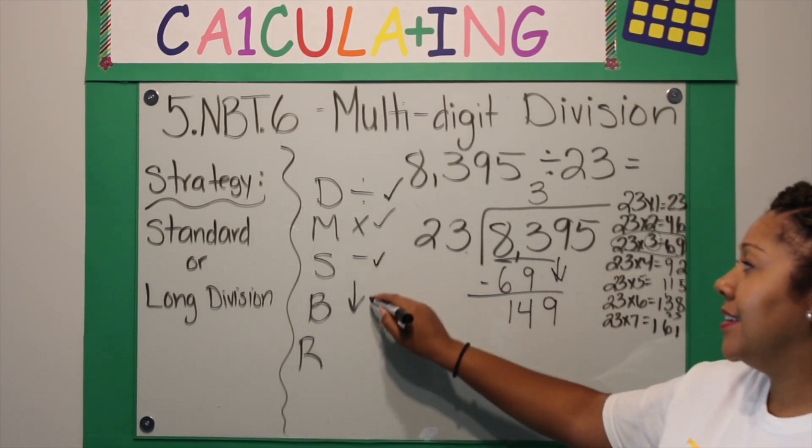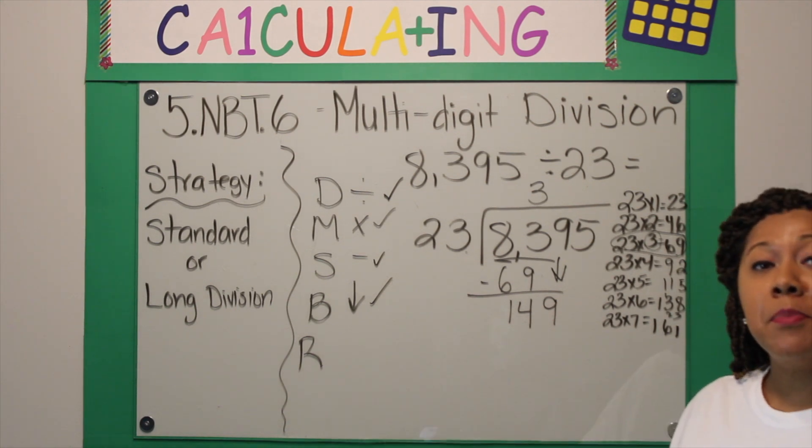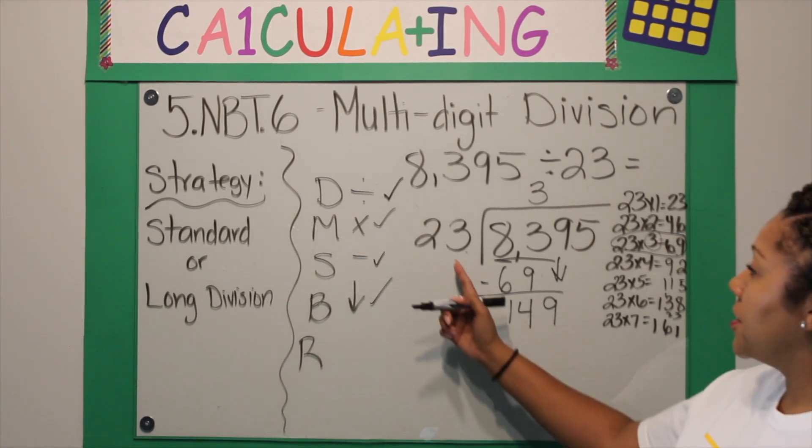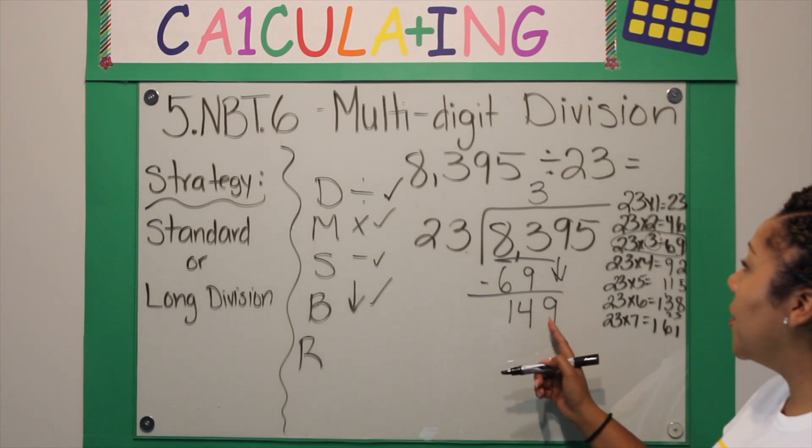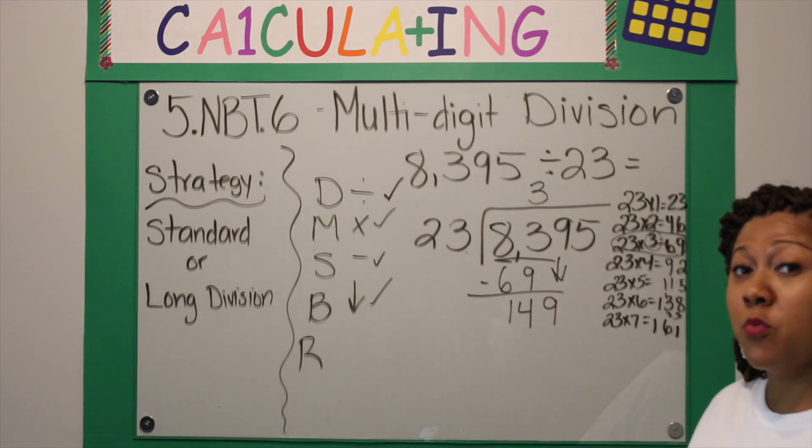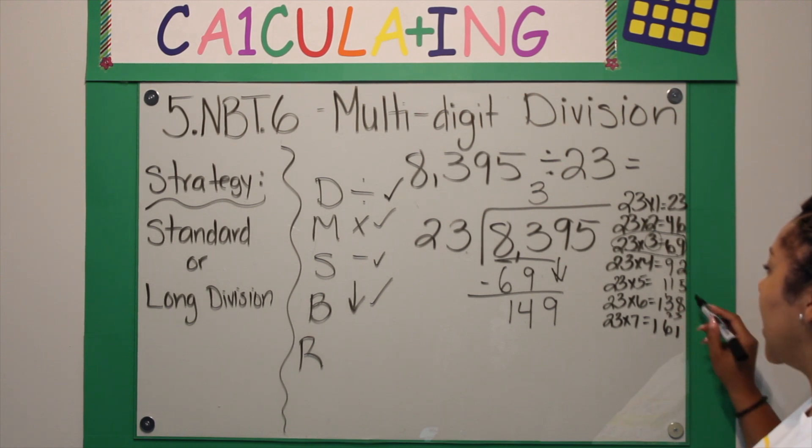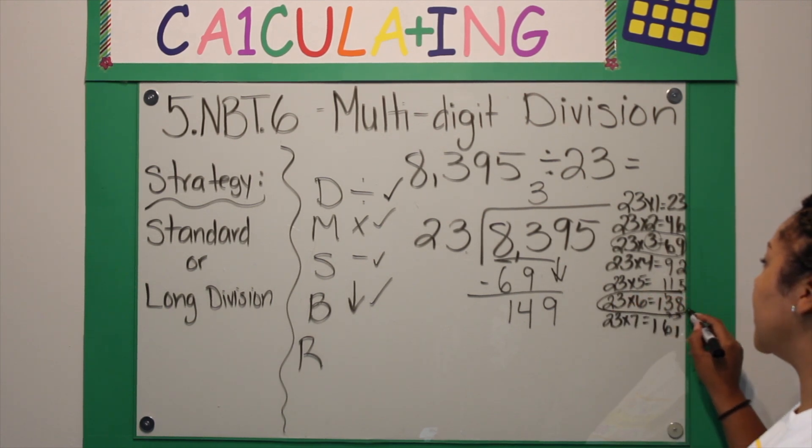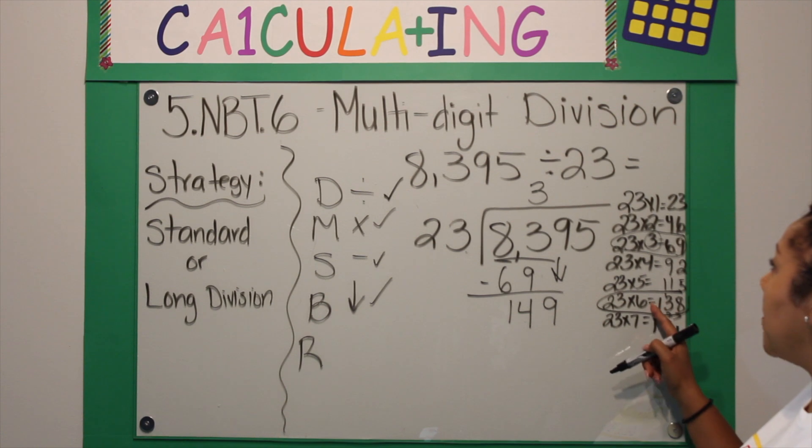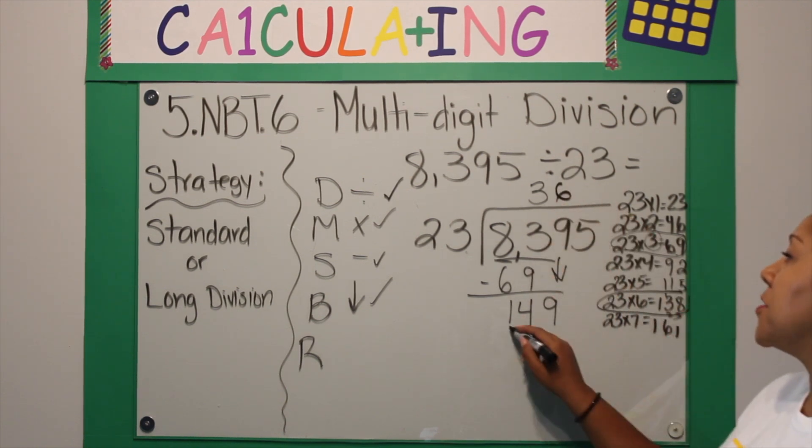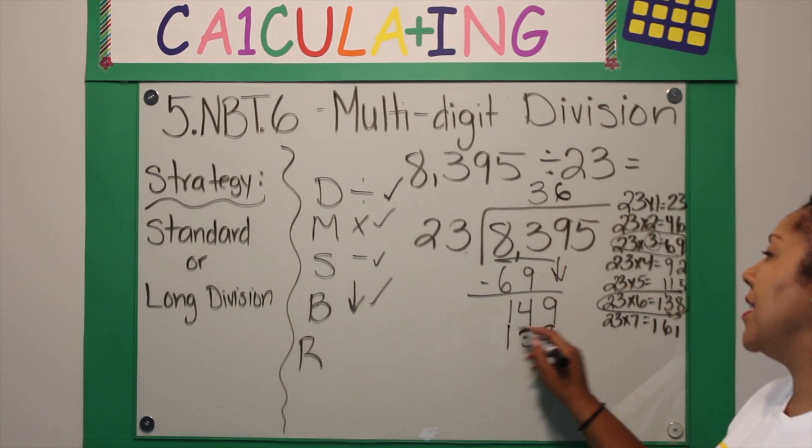Now I bring down my next digit, which is a 9, and now I am going to repeat the process again. So now how many groups of 23 go into or come out of 149? I'm going to look at my facts and it looks like it's going to be 6. So my 6 goes here. 6 times 23 is 138.